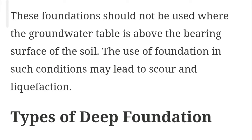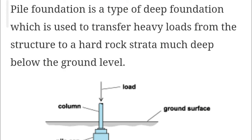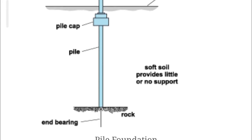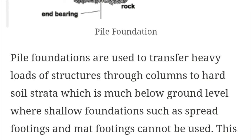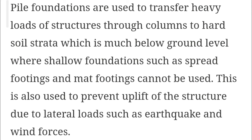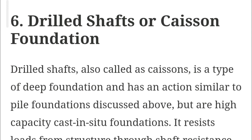The next main type is deep foundation — pile foundation. Pile foundation is a type of deep foundation used to transfer heavy loads from the structure to hard strata at depth below the ground surface. It is used where shallow foundations such as spread footings and mat foundations cannot be used. It is also used to prevent uplift of the structure due to lateral loads such as earthquake and wind forces. Pile foundation transmits load in two ways: skin friction and end bearing. Piles that transfer load at the tip are called end bearing piles; those that transfer load through friction along the sides are called friction piles. In most cases, pile foundations act as both friction and end bearing piles, which is very effective for load transfer.